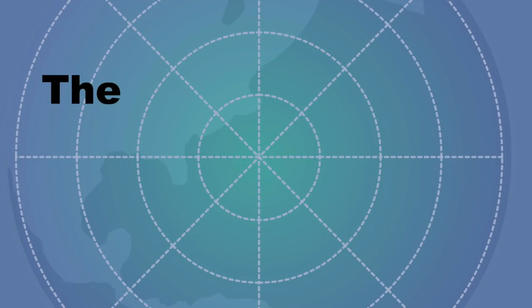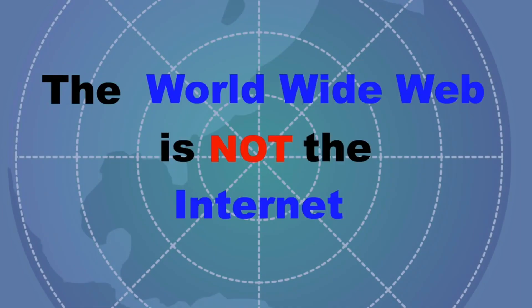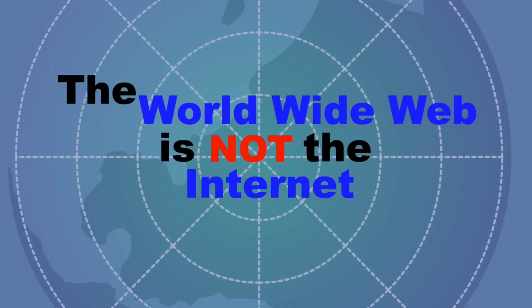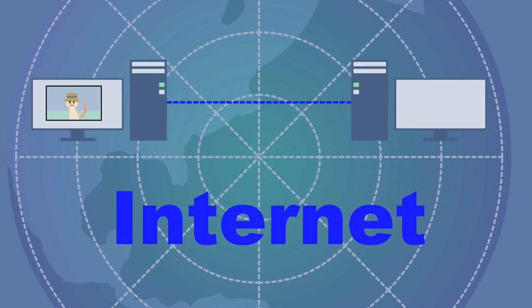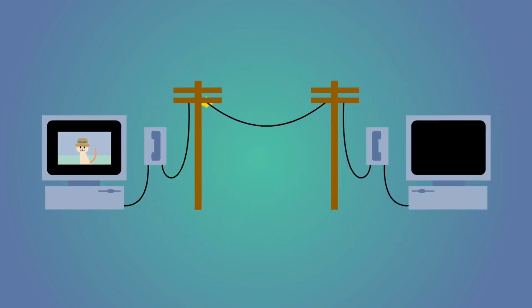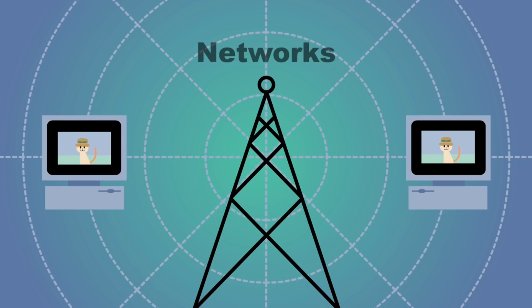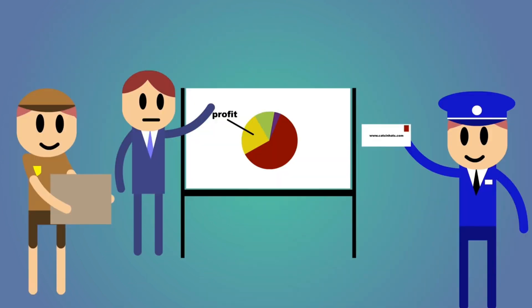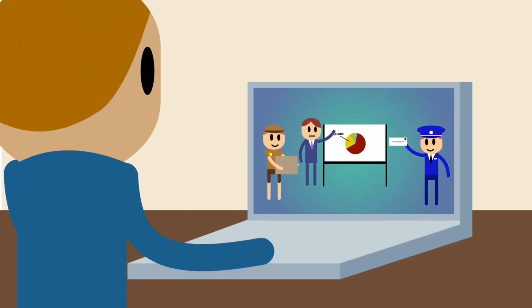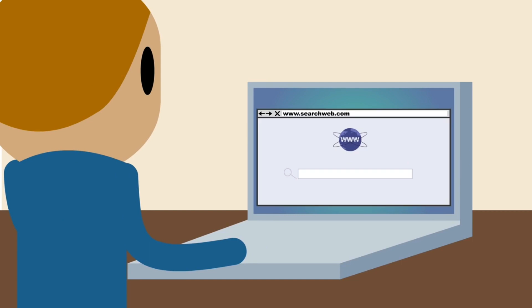Well, first of all, the World Wide Web is not the Internet, even though the terms are often used interchangeably. The Internet is simply the way computers connect to each other in order to share information. When the Internet first emerged, computers actually made direct calls to each other. Today, networks are all around us, so computers can communicate seamlessly. The communication enabled through the Internet has many uses, such as email, file transfer, and conferencing. But the most common use is accessing the World Wide Web.